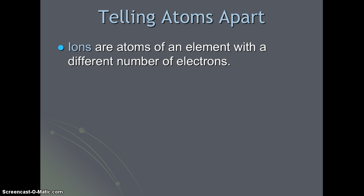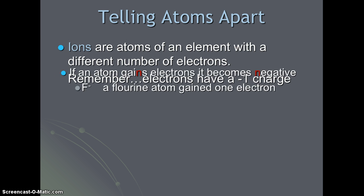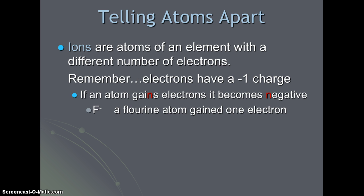There are atoms that are called ions, which are atoms of an element with a different number of electrons. Remember, electrons carry a one negative charge. So when an atom gains electrons, it becomes more negative. An example would be a fluorine atom. Fluorine atoms typically gain one electron, which gives it a negative one charge, which you can see with the little charge next to the symbol for the element.